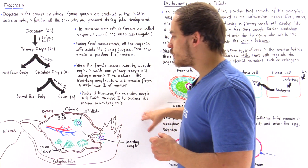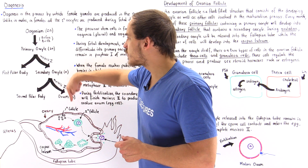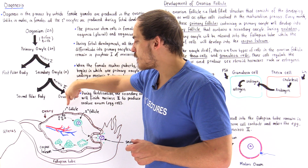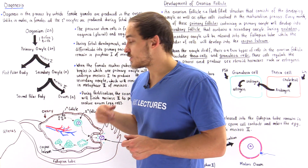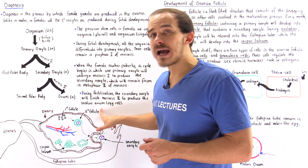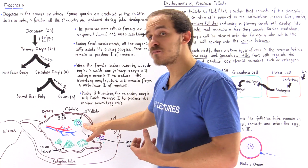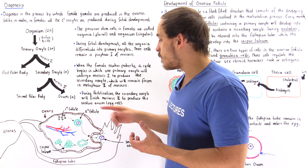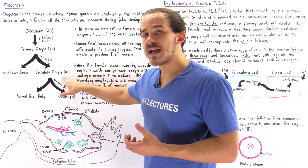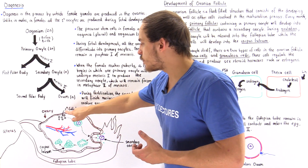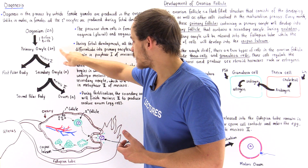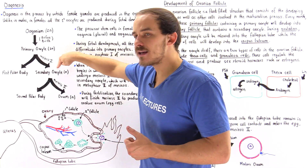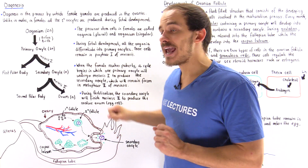An ovarian follicle is the fluid-filled structure found inside the ovary that contains not only the developing oocyte but also other cell types that assist in the process of oogenesis. The primary follicle contains the diploid primary oocyte, and during the menstrual cycle it will eventually develop into the secondary follicle, which is much larger because it contains more fluid, more cells, and also the secondary oocyte — a haploid cell.